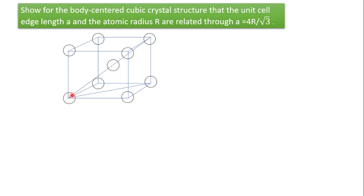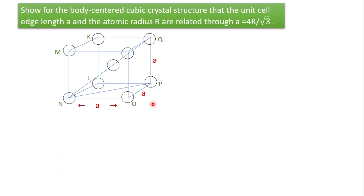Along the body diagonal, there is one full atom radius r, then another r from the center atom, making 2r, plus another r and another r — giving 4r total. Note that the line is inside the unit cell and does not touch the outer vertex atom. The lattice parameters along the three sides are all a, a, and a.